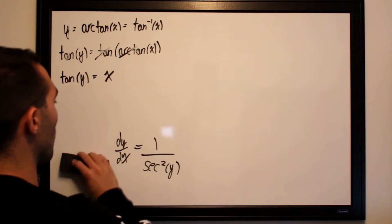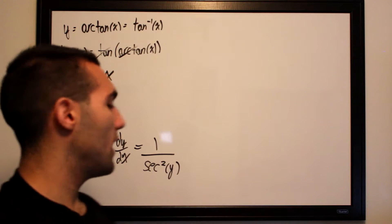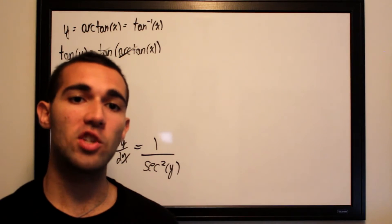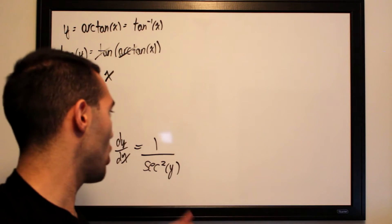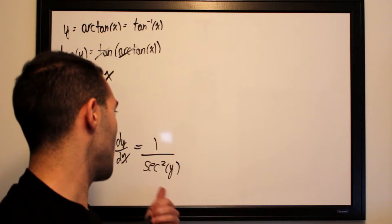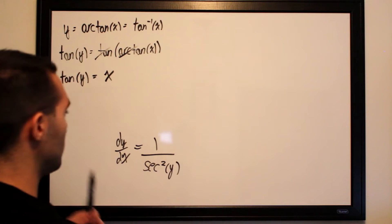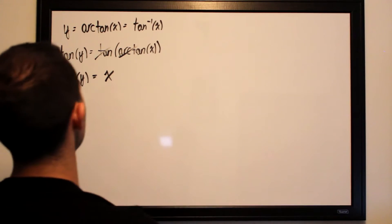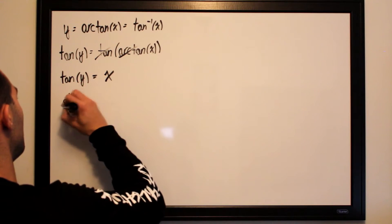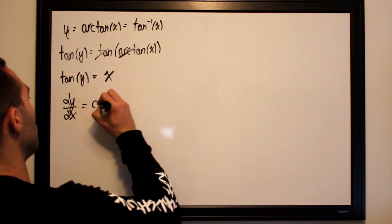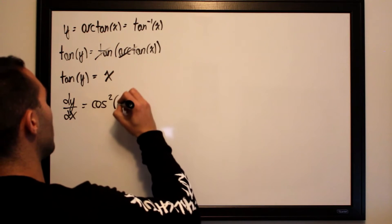dy/dx is equal to 1 over secant squared of y. And secant and cosine are essentially inverses of each other, so we can rewrite dy/dx as cosine squared of y. So dy/dx equals cosine squared of y.